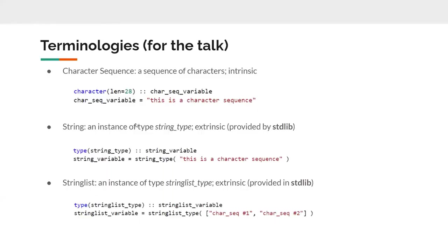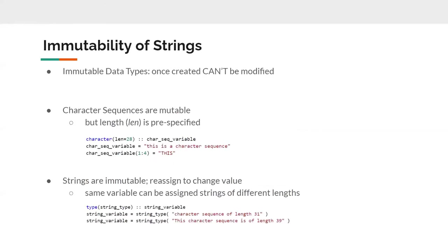Here are some of the terminologies used throughout the talk. When I say 'character sequence', I mean a sequence of characters — a feature that is intrinsic to Fortran. When I say 'string', I mean an instance of type string_type — a feature that is extrinsic to Fortran and provided in the standard library. For all three examples, I have a small code snippet where in the first line I define a variable, and in the next line I assign that variable a value.